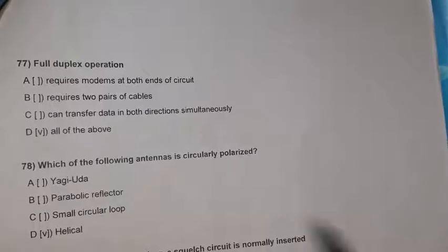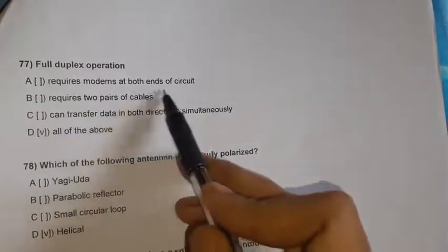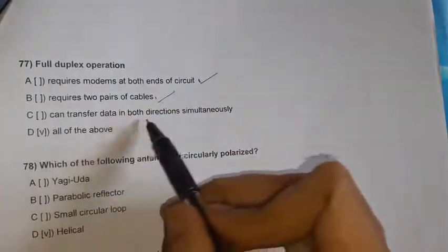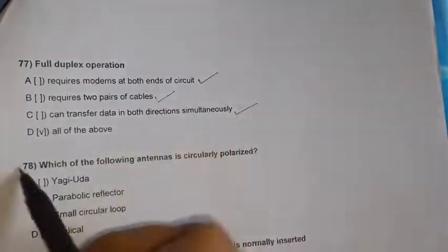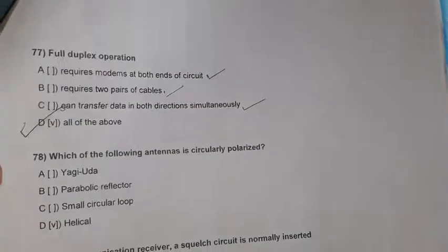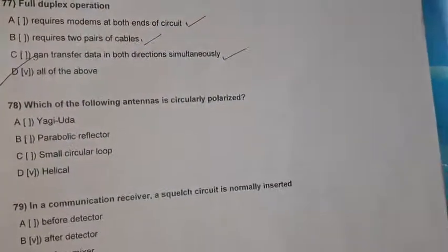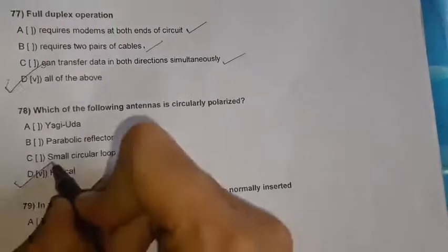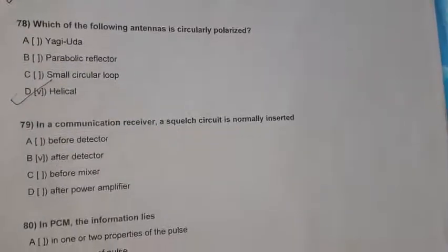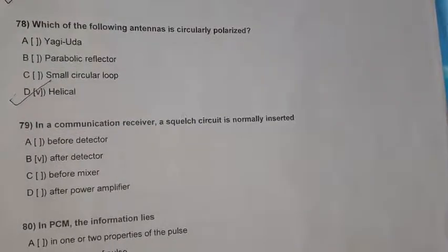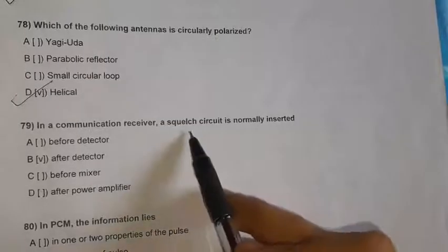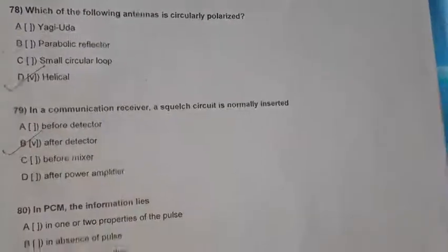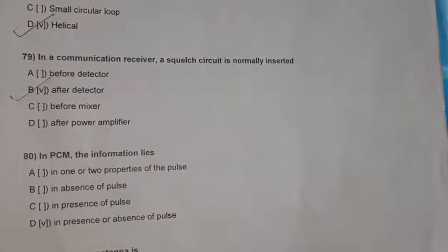Question 77: Full duplex operation means it requires modems at both ends of a circuit, requires two pairs of cables, and can transfer data in both directions simultaneously. Option D, all of the above, is the right option. Question 78: The circularly polarized antenna is the helical antenna. Question 79: In a communication receiver, the squelch circuit is normally inserted after the detector.